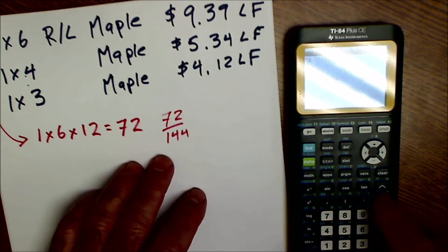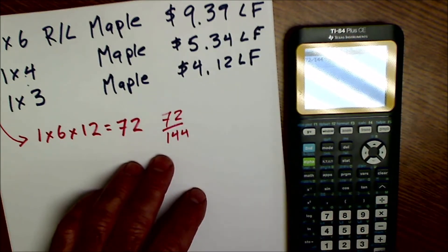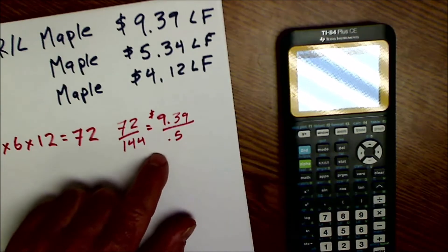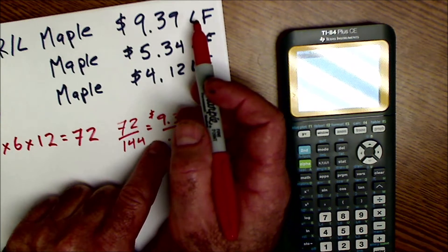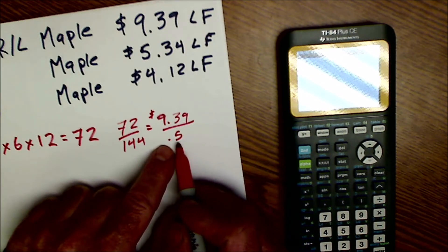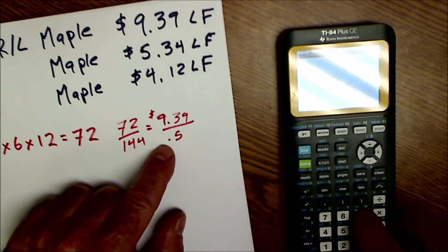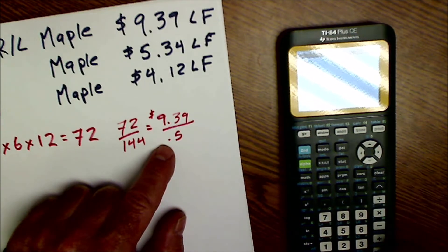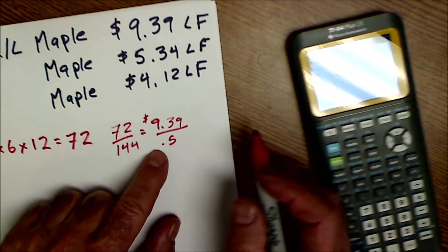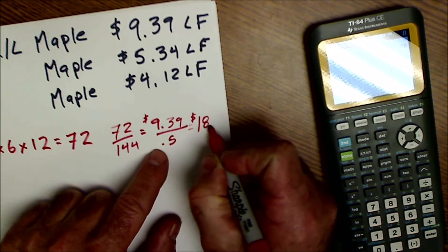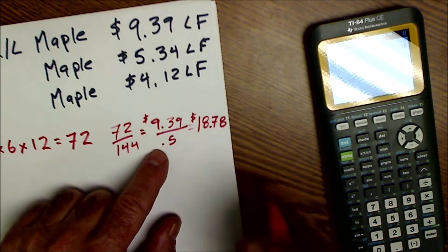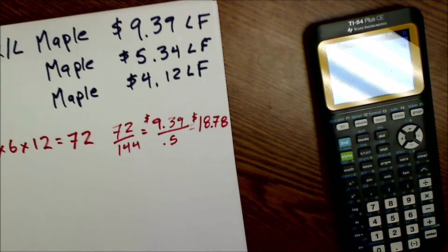So 72 divided by 144 is 0.5. Then we're going to take that $9.39 per linear foot and divide it by the number of board feet it is. So we're going to divide it by the 0.5 board feet, 9.39 divided by 0.5, and it works out to be $18.78 per board foot. It's pretty expensive.